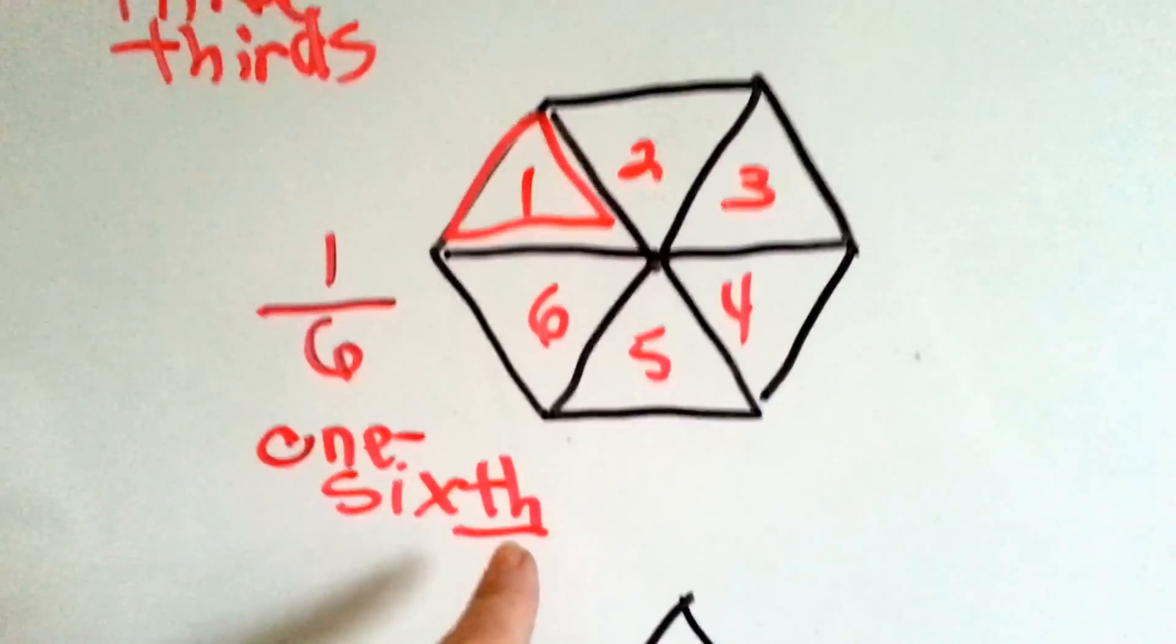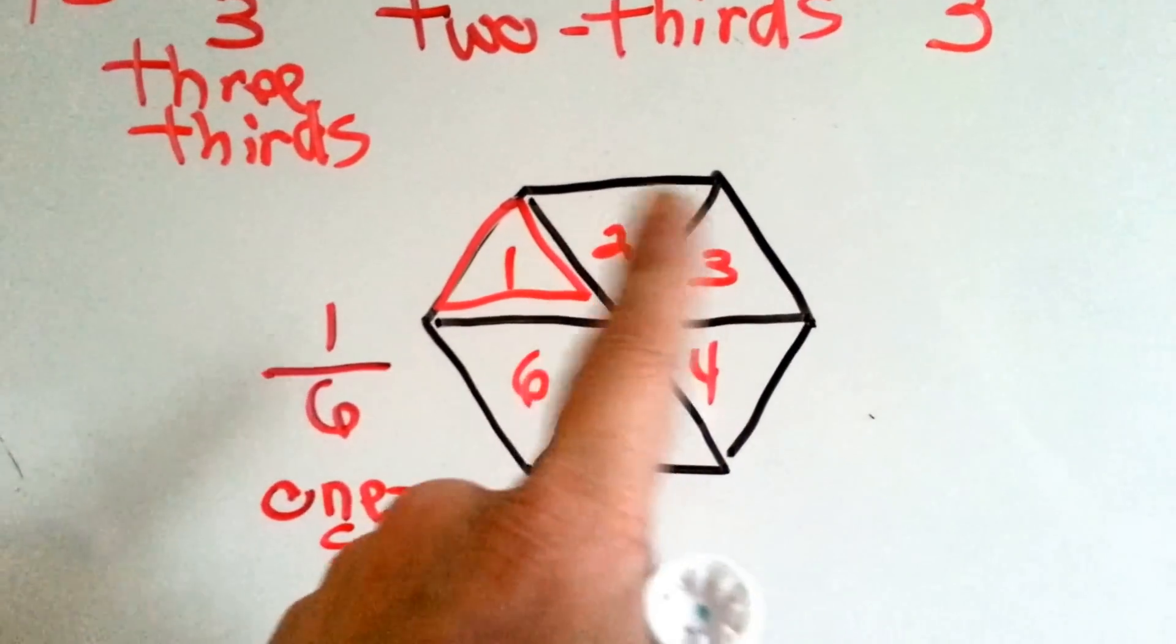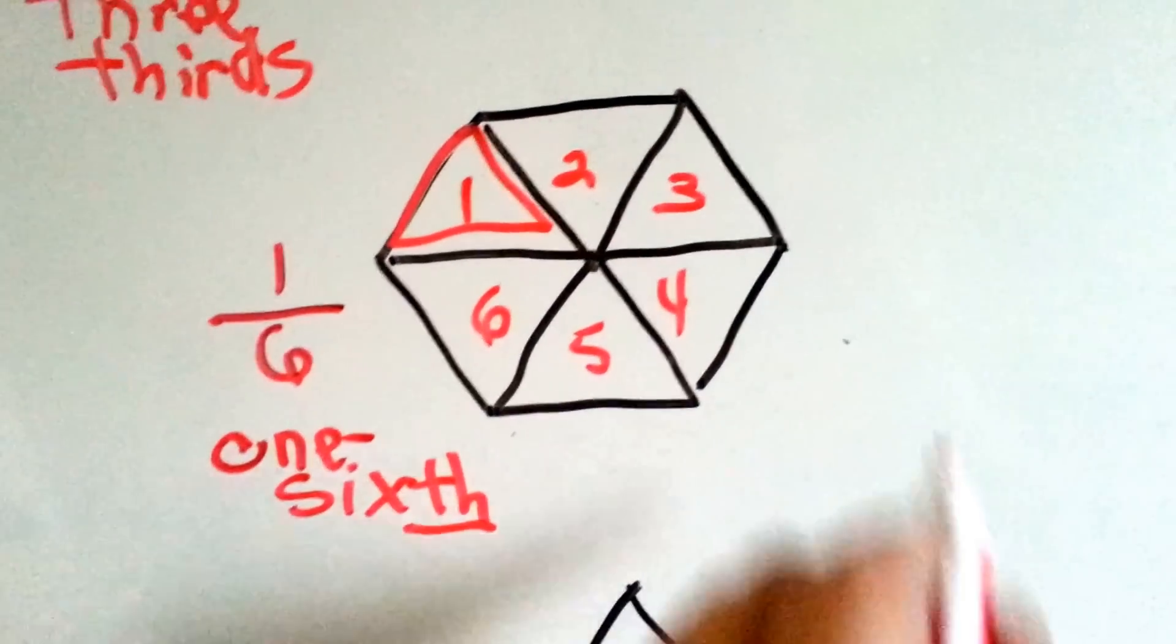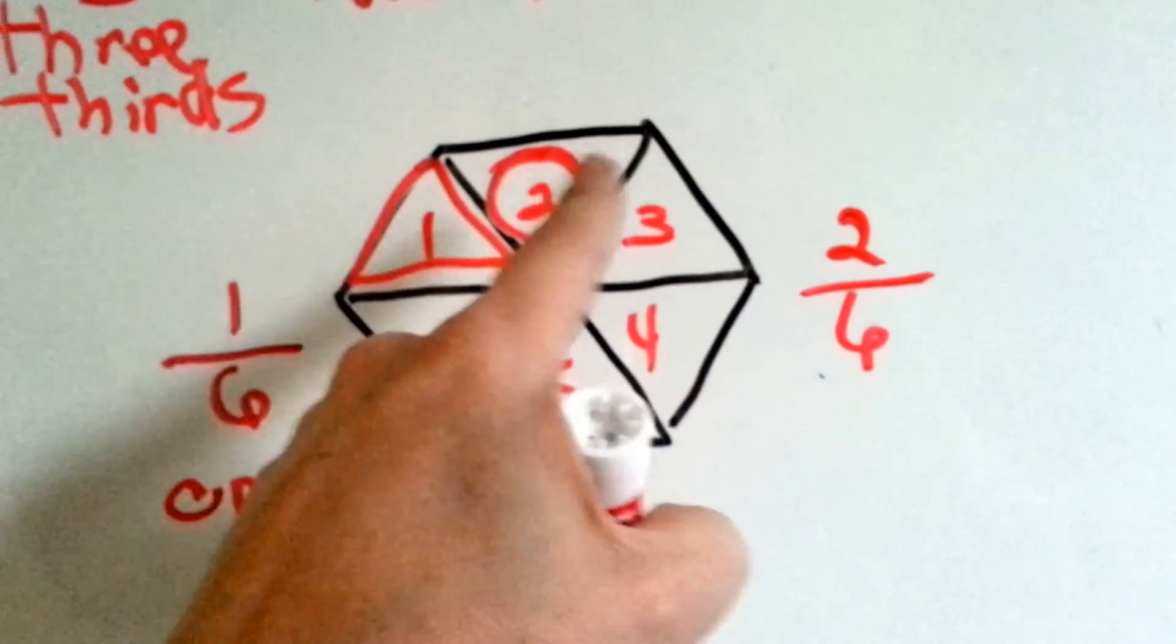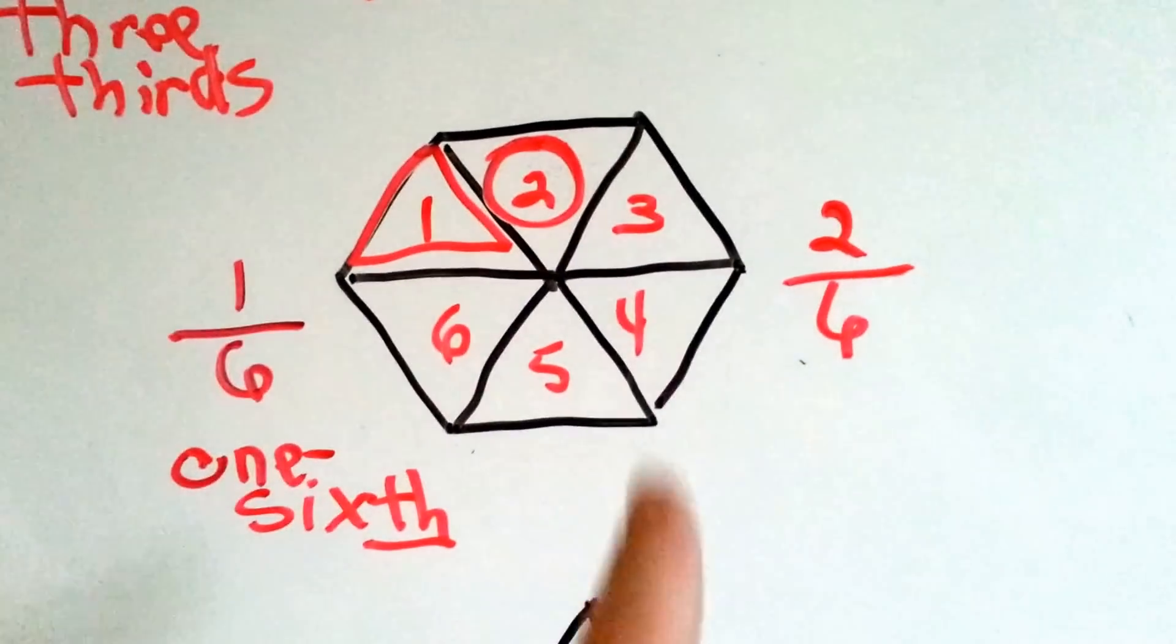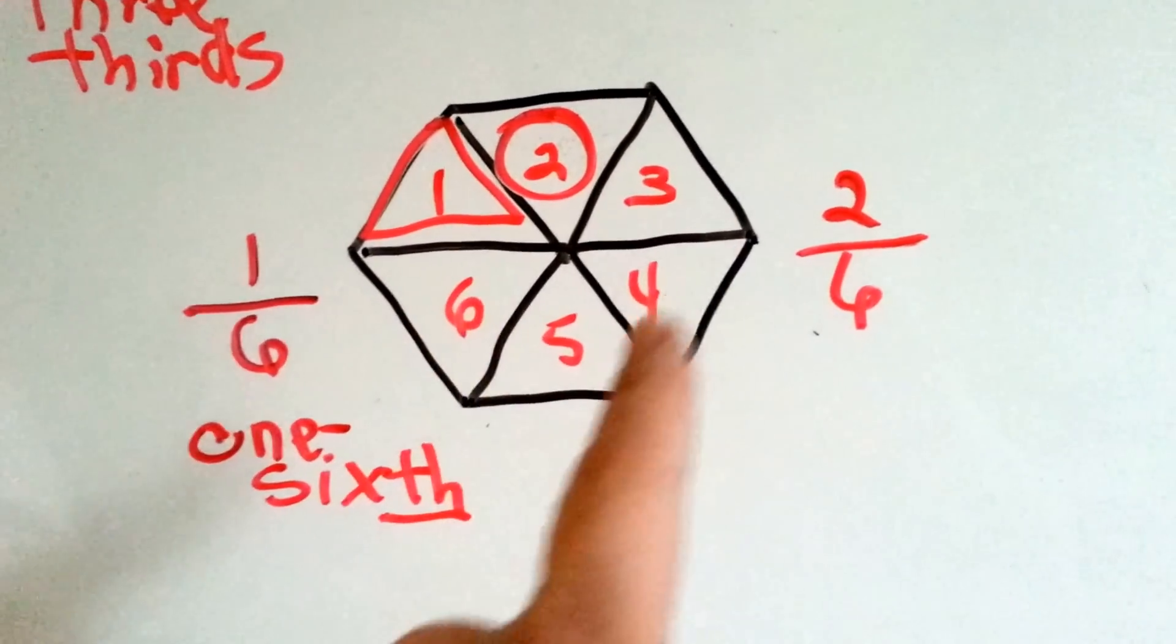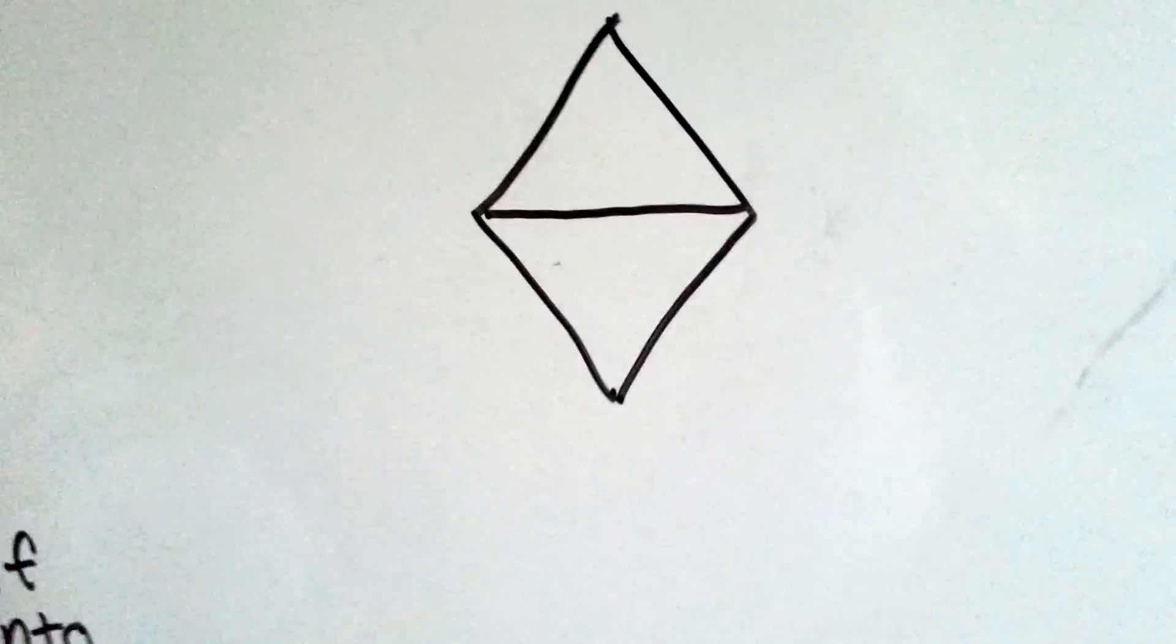See how we put the th at the end? If you ate two of the pieces, you would eat two sixths. See? That means you're eating two of them. And you could have three sixths, four sixths, five sixths, and six sixths. And if you ate six of the six pieces, then you would have eaten the whole cake.